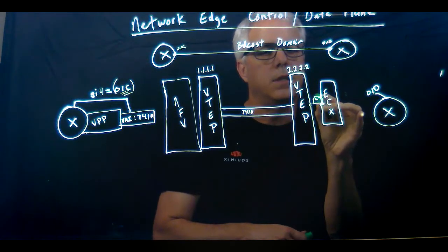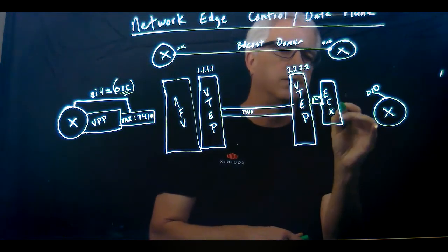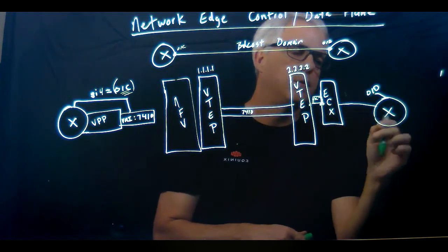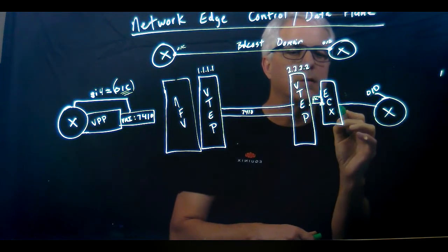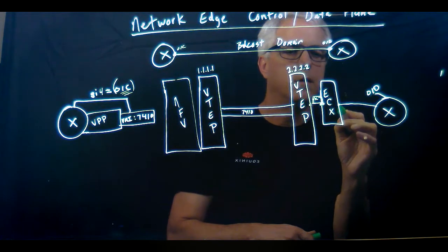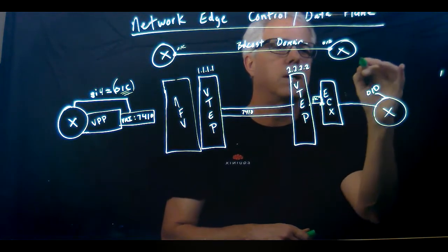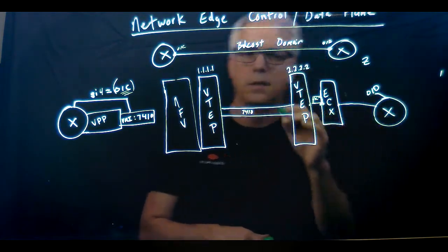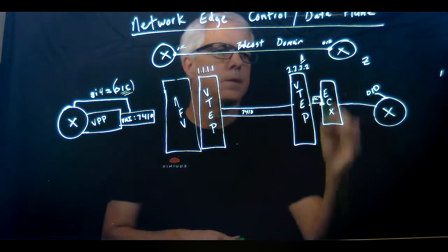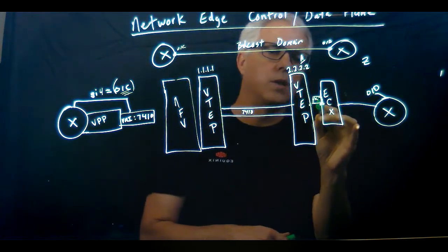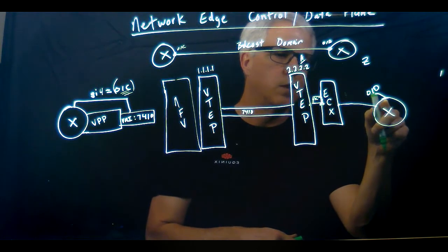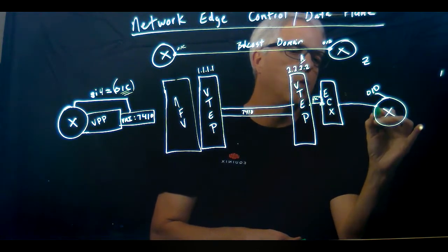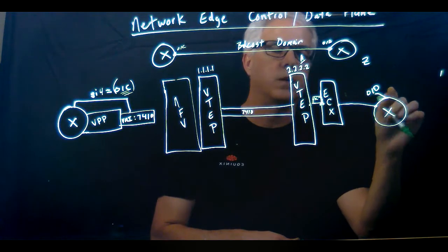01C is sitting here on the ECX switch. This router from the service provider is plugged into the ECX switch on the Z side. Remember we talked earlier about this being the Z side and this being the A side. So the 01C MAC address needs to find its way over and be in the same broadcast domain as the 01D MAC address on the respective cloud providers.